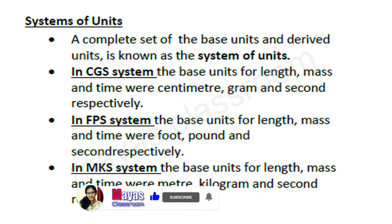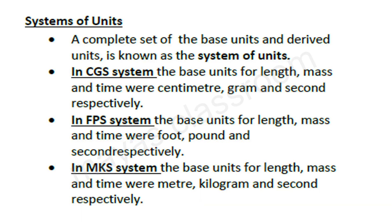To summarize the three systems: CGS is centimeter, gram, second; FPS is foot, pound, second; MKS is meter, kilogram, second. These are the three main systems of units.